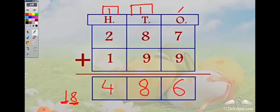Next example: 287 plus 199. Rule number 1: always add the ones place first. Here 7 plus 9 equals 16. Should we write 16 here? No — we write 6 and carry over 1 to the tens place. The carry over makes a new room in the tens place.